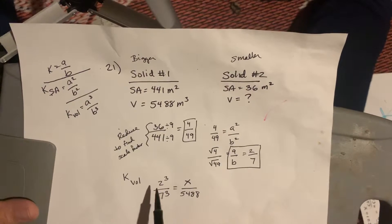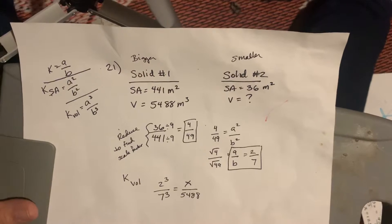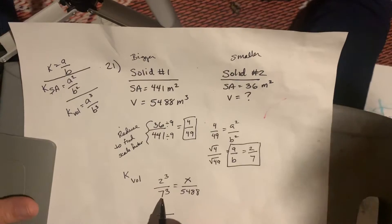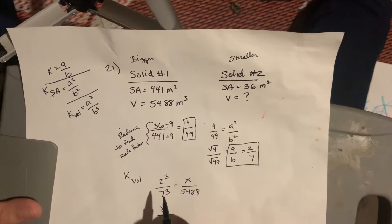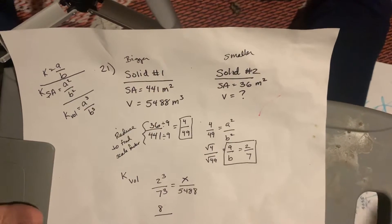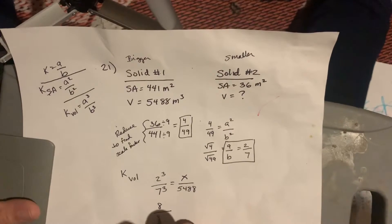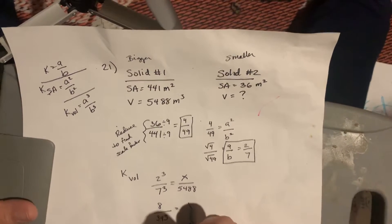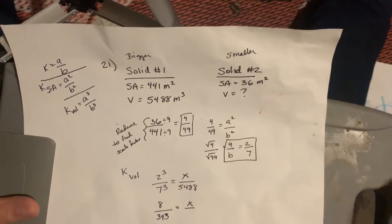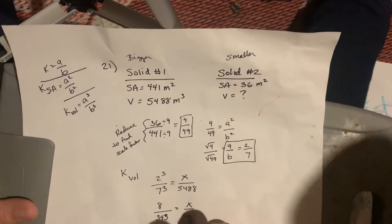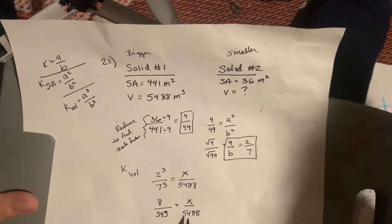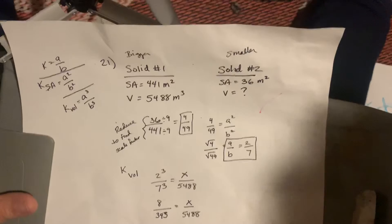So, I need to actually take the number to the 3rd power before I can do my cross-multiplying. So, 2 times 2 times 2 is 8. And 7 times 7 times 7 is 343. So, that's going to be equal to X over 5,488. And then you can cross-multiply. 343 times X. 8 times 5,488. And then solve for X.